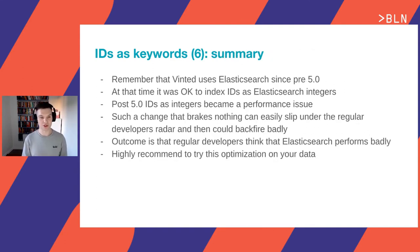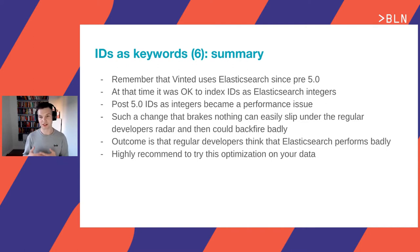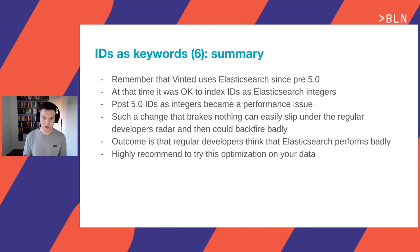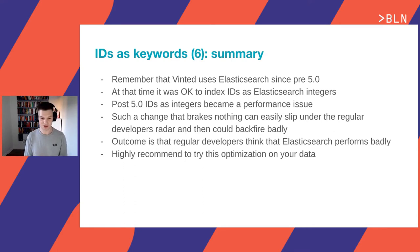Since we use up to 10 such fields with every search query, this meant a huge performance improvement. The required change was as simple as changing the index mappings and re-indexing all the data — no query changes required. To summarize: Vinted started using Elasticsearch when indexing integers as IDs was fine, but after the upgrade to version 5.0, IDs as integers silently became a performance issue. This change broke nothing but easily slipped under the radar of regular backend developers, and sometime later backfired badly. I highly recommend trying this optimization on your workloads.